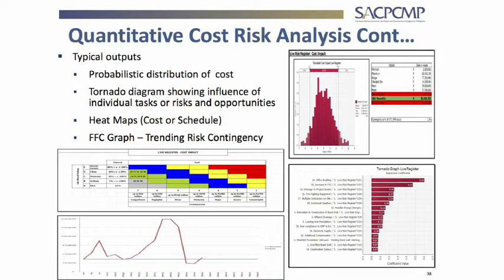Lastly, you have your tornado diagram — the bottom right-hand one. You can rank your risk register to show which risks will have the highest impact on schedule or cost. The tornado diagram shows which risks affect the majority of areas on site — because a risk might affect more than one area. A strike, for example, affects all disciplines simultaneously.